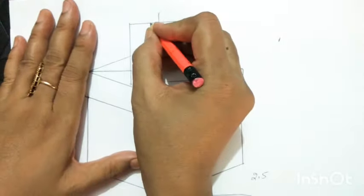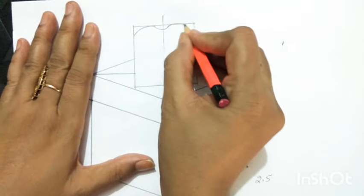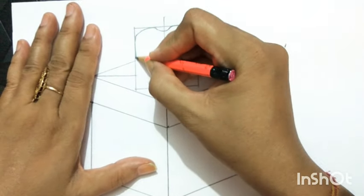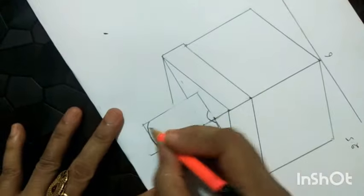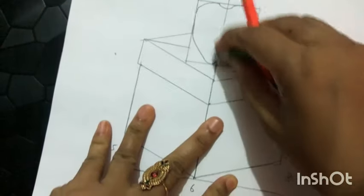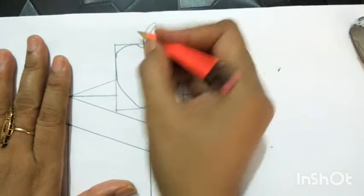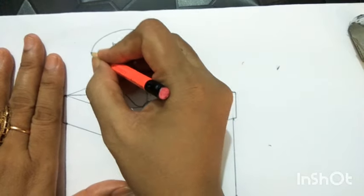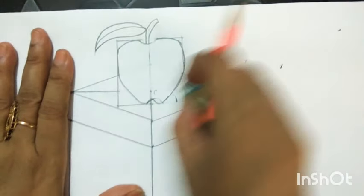Now draw a C shape for the apple. Take curved lines on both sides and draw an apple on it. Change the line and make sure the line is clear.